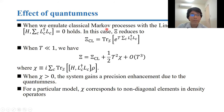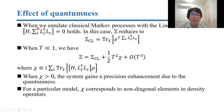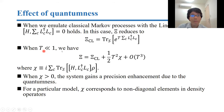Let me explain the effect of quantumness in this equation. When we emulate classical Markov processes with the Lindblad equation and this relation holds, then Ξ reduces to Ξ_CL, given by a specific equation. When T is very small, Ξ and Ξ_CL are related by a correction term Ξ defined as the average commutation relation between the Hamiltonian and jump operators. When this Ξ is larger than zero, the system gains a precision enhancement due to quantumness, and for a particular model, this Ξ corresponds to non-diagonal elements in the density operator.